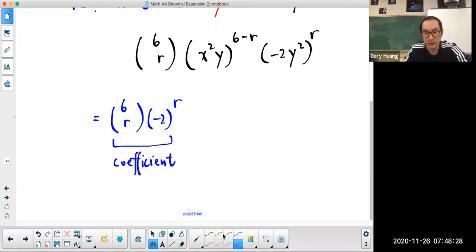Now what about the variable? The variable contains x and y. For the first term here I'm going to separate the x and the y. x is going to be raised to this power and y to that power. So x is going to be to the power of 12 minus 2r.